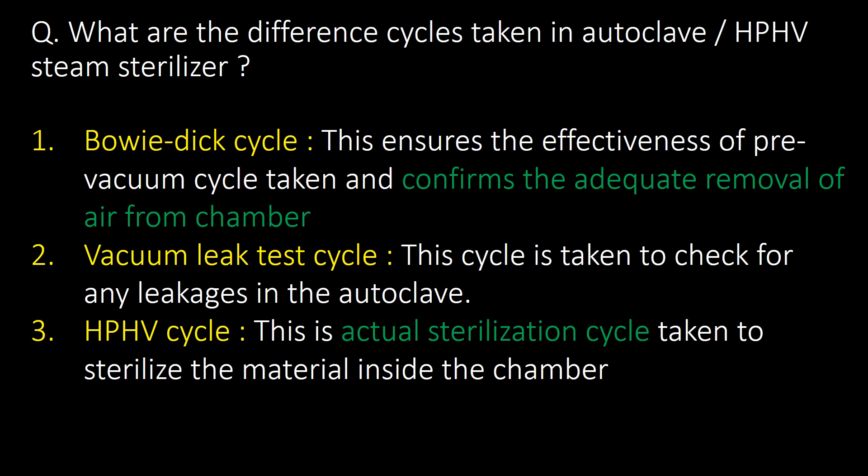Welcome. We will start with some basic questions and then go in detail. First question: what are the different cycles taken in autoclave or HPHB steam sterilizer? The first cycle is the Bowie-Dick test cycle, which is taken to confirm adequate removal of air from the chamber. Second is the vacuum leak test cycle, which checks for leakages in the autoclave. Third is the HPHB cycle, which is the actual sterilization cycle.